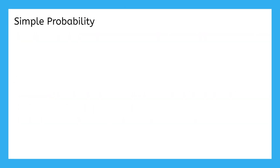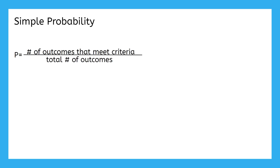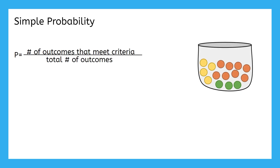In the previous lesson, you learned how to calculate simple probability as the number of outcomes that meet the criteria over the total number of outcomes. This formula worked great when we had something like 15 marbles and 4 of them were yellow. Then we could say that the probability of drawing a yellow marble is 4 out of 15.